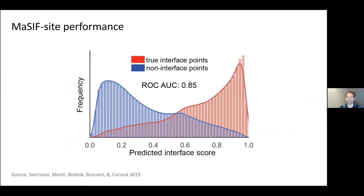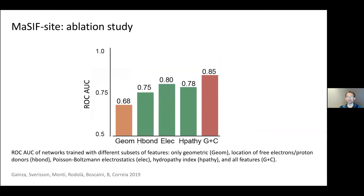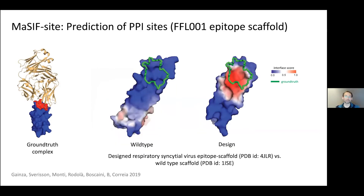Here you can see the distribution of true interface and non-interface points with their predicted interface scores. An ablation study shows the trade-off between chemical and geometric features — the best results are achieved with a combination of both. The ROC AUC is about 85%. One example shows a protein with a rather flat interface, difficult to target with a small molecule — a viral epitope. You can see that the wild-type protein on the left is predicted as unlikely to be an interface, while the hand-engineered modified protein on the right is predicted as likely to bind.